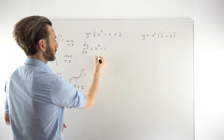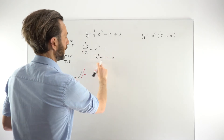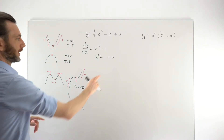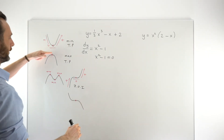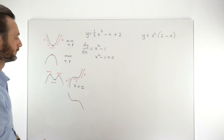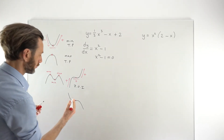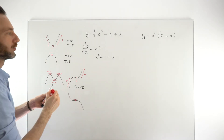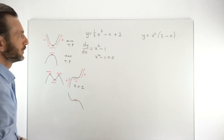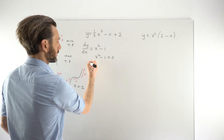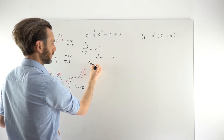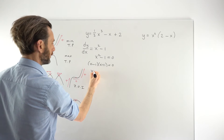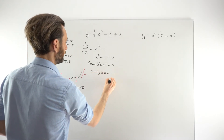For the stationary points, we take this derivative and set it equal to zero. At these stationary points, the tangent line would be horizontal, meaning a zero gradient or zero derivative. Solving this quadratic equation: it's a difference of squares, so we factorize as (x minus 1)(x plus 1), giving us x equals 1 and x equals minus 1.